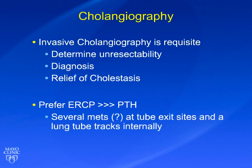We prefer endoscopic approaches over percutaneous transhepatic approaches. We've seen several people develop metastases at the site of percutaneous tubes, and we've seen tracking along tube sites. Cholangiocarcinoma, when it does metastasize, typically metastasizes to the peritoneum and the mesentery — it's a cancer you can clearly seed.